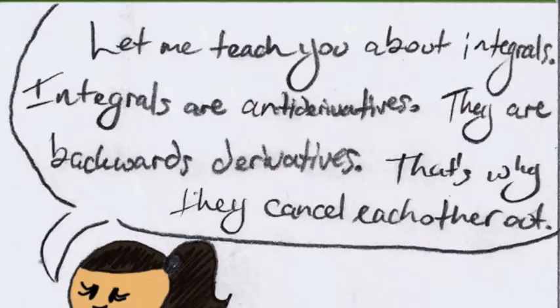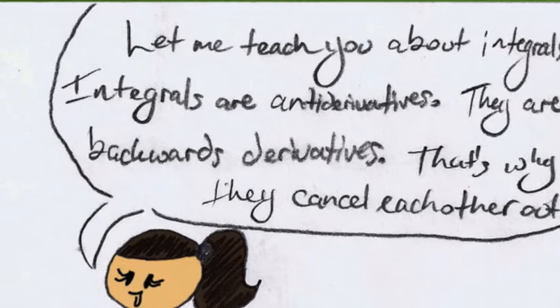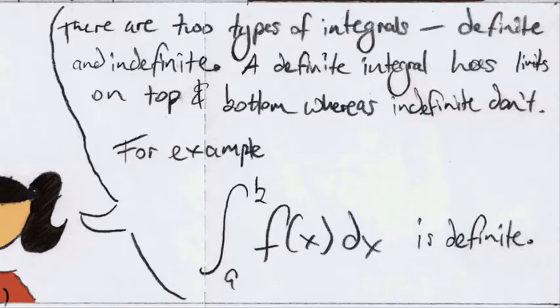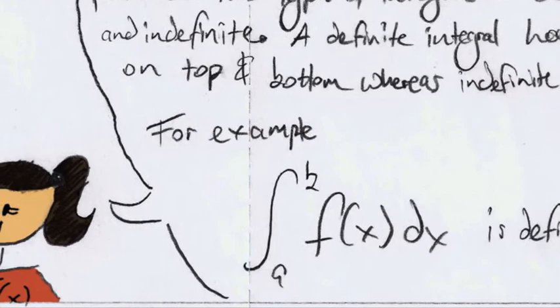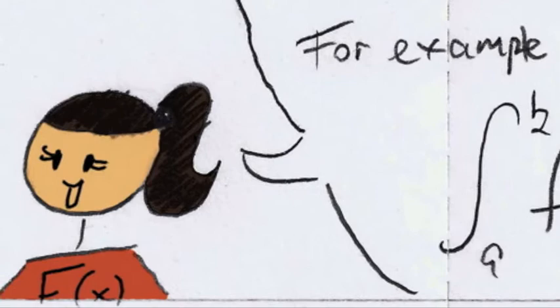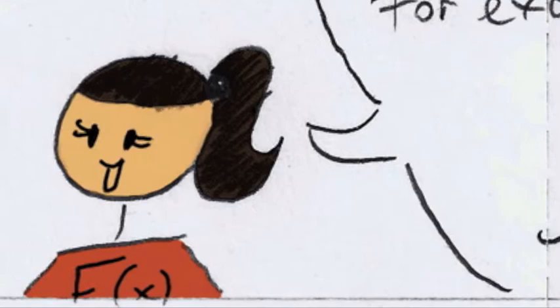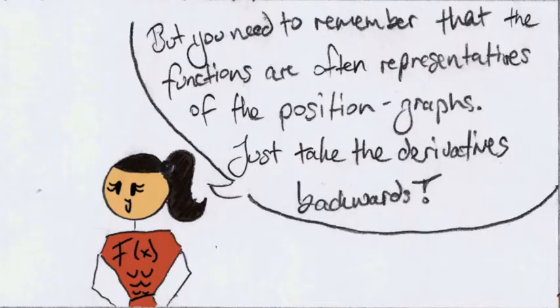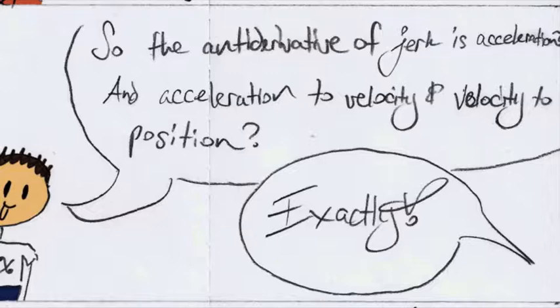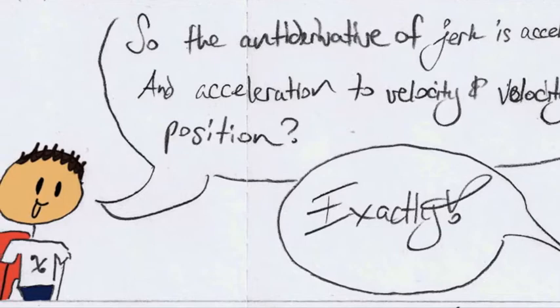Let me teach you about integrals. Integrals are antiderivatives. They are backwards derivatives. That's why they cancel each other out. There are two types of integrals, definite and indefinite. A definite integral has limits on top and bottom, whereas indefinite don't. For example, the integral of f of x dx from a to b is definite. But, you need to remember that the functions are often representatives of the position graphs. Just take the derivatives backwards. So, the antiderivative of jerk is acceleration, and the acceleration is velocity, and the antiderivative of velocity is position? Exactly!